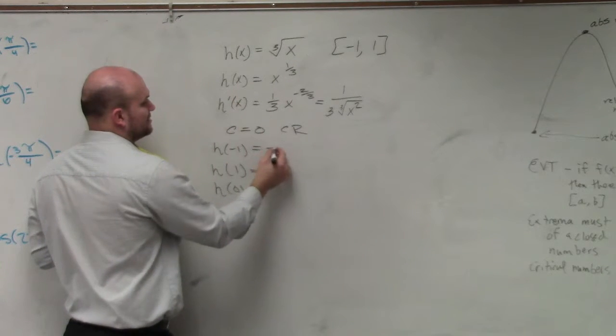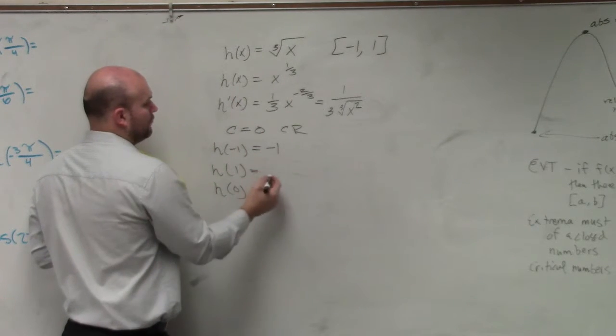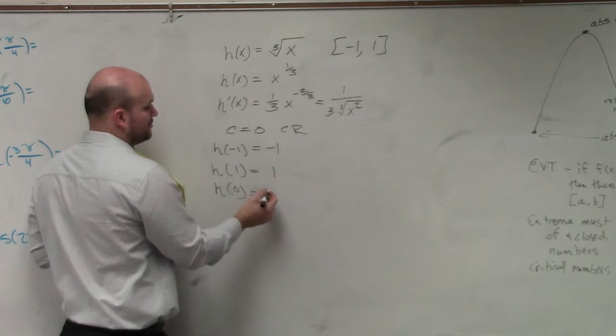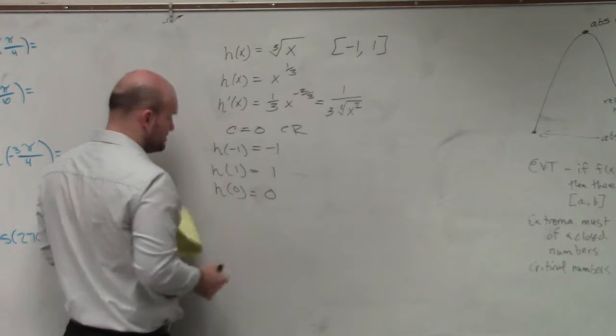So cube root of negative 1 is going to be negative 1. Cube root of 1 is going to be positive 1. And cube root of 0 is going to equal 0.